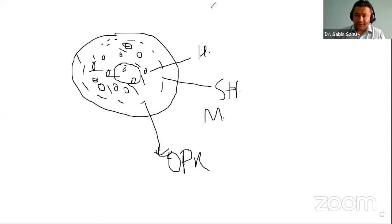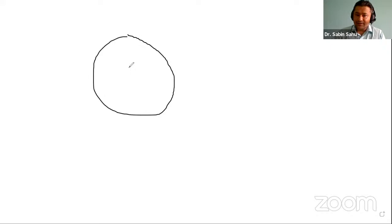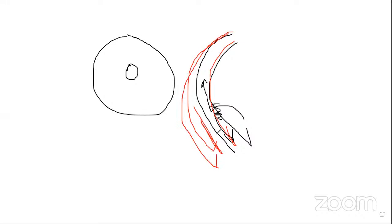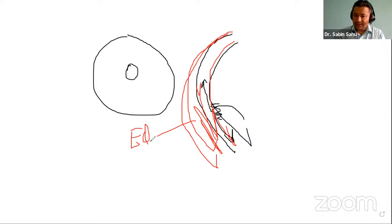A question about acute hydrops: it is a complication of keratoconus where the Descemet's membrane acutely ruptures and aqueous fluid enters the stroma, leading to corneal thickening, loss of transparency, edema, and severe pain. From the Zoom chat: keratoprosthesis is an artificial device where a small central part of the cornea is replaced with a device containing lenses, providing an optical pathway to the posterior segment. It is used as a last resort for visual rehabilitation in patients with severely damaged ocular surfaces but with good posterior segment potential.